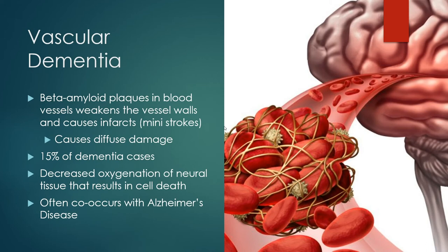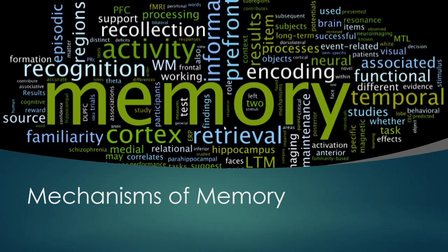Most of what we know about memory comes from lesion studies, because dementia is really hard to make conclusions from given how diffuse it is — affecting so many different things. We'll do a surface level look at these different memory systems now, and on Wednesday we'll take a deeper dive into the cellular stuff.